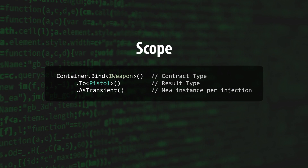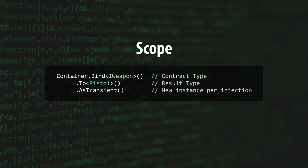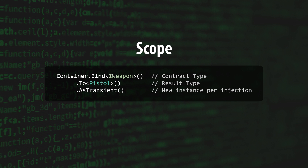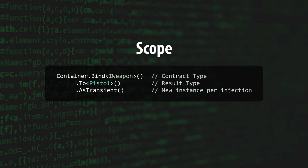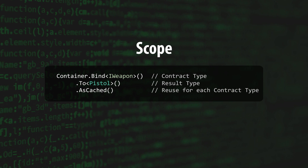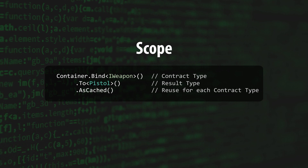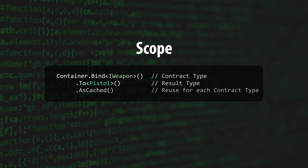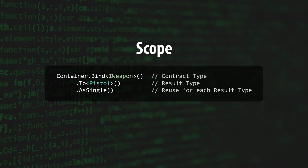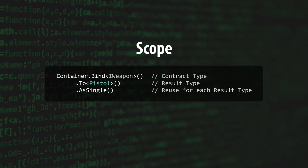Zenject also supports the scope in which your objects are created by calling As followed by the scope. Scope determines how often an object should be reused across multiple injections. The default method is AsTransient, which tells the container not to reuse the same instance of result type — meaning a new instance of result type will be created for each injection. The AsCached method tells the container to reuse the same instance of result type for each contract type injection. Similar to AsCached, AsSingle tells the container to reuse the same instance of result type for each injection of a type that result type derives from, effectively making your injection a singleton — hence the name.